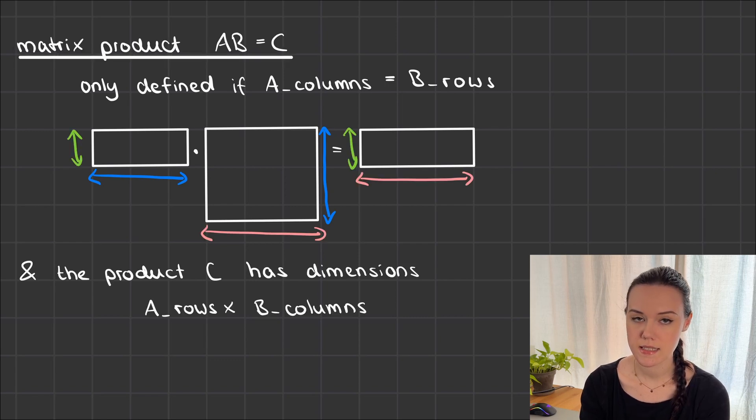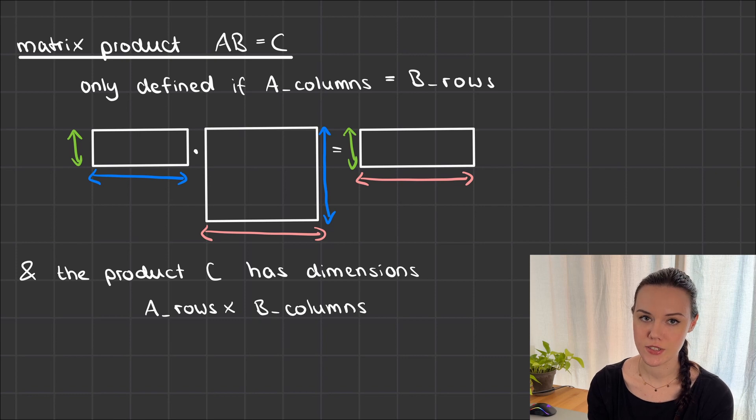In this diagram I've marked those two dimensions with blue. If that is the case then the matrix product is defined and the result, in this case I called it C, has the same number of rows as A and the same number of columns as B. In this diagram these are the green and pink dimensions.